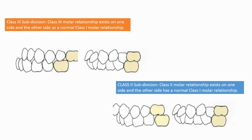Other occlusion classifications: Class 3 subdivision, where a Class 3 molar relationship exists on one side and the other side has a normal Class 1 molar relationship. Class 2 subdivision, where a Class 2 molar relationship exists on one side and the other side has a normal Class 1 molar relationship.